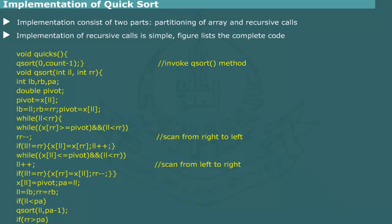Implementation of quick sort. The implementation of quick sort method consists of two parts, partitioning of array and recursive calls. For the partitioning, we shall follow the algorithm discussed previously. The implementation of recursive calls is simple and straightforward. Figure lists the complete code.